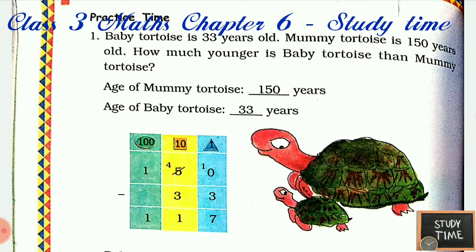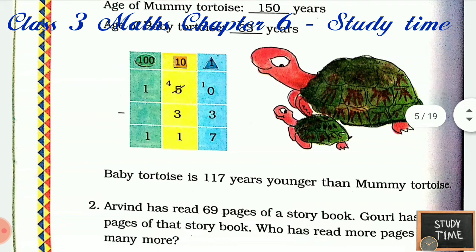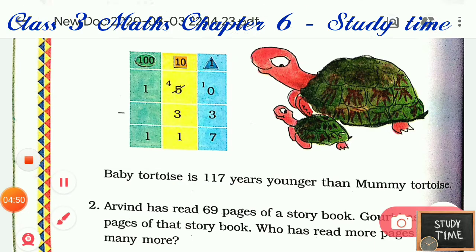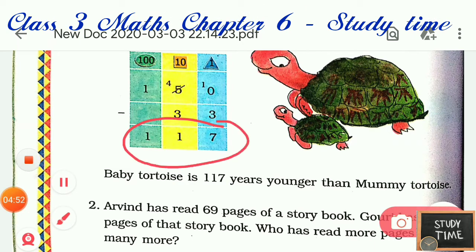Practice time! Baby tortoise is 33 years old and mummy tortoise is 150 years old. How much younger is baby tortoise than mummy tortoise? You have to subtract 150 minus 33. The answer is 117. Baby tortoise is 117 years younger than mummy tortoise.